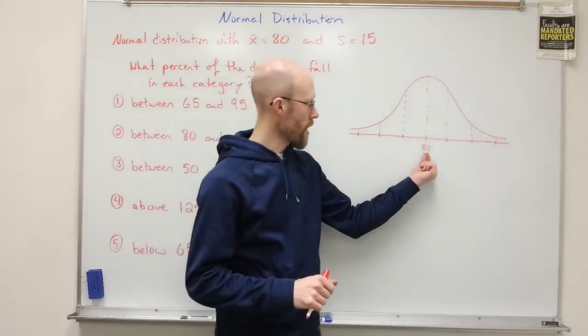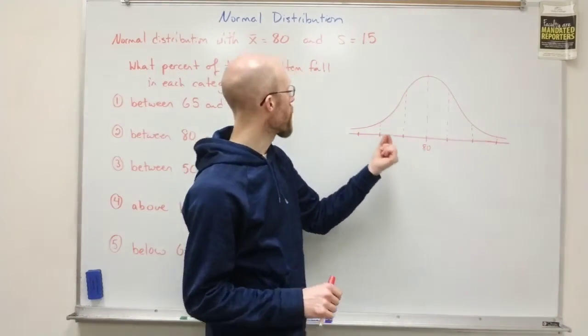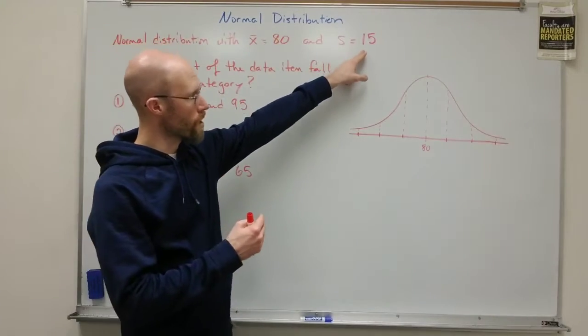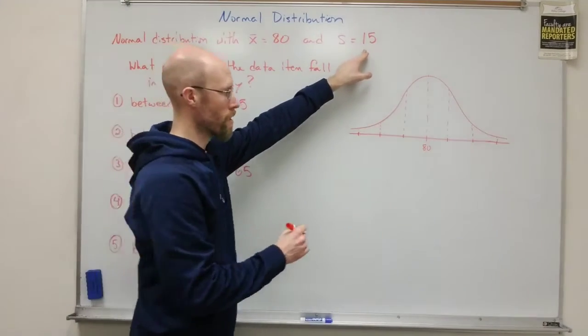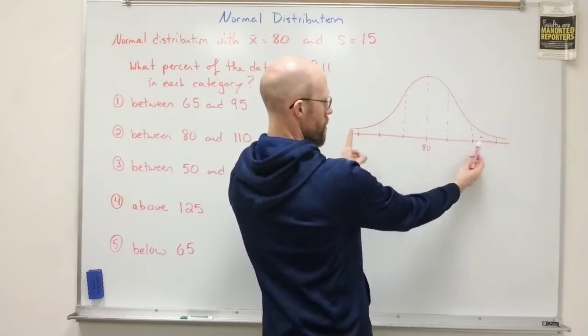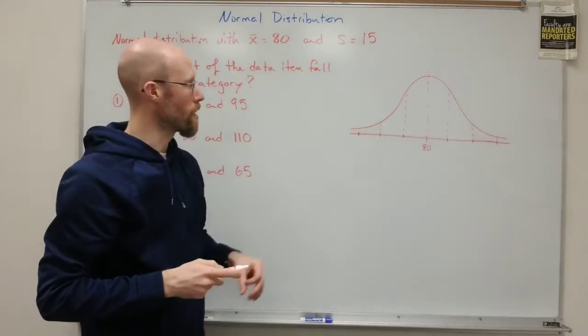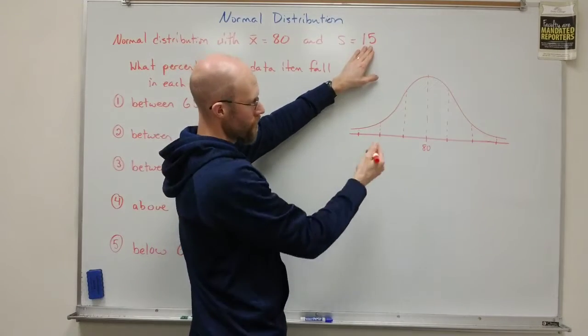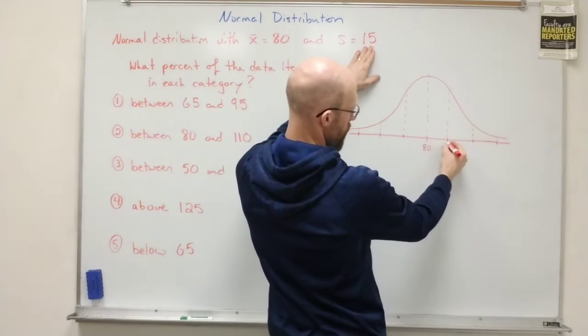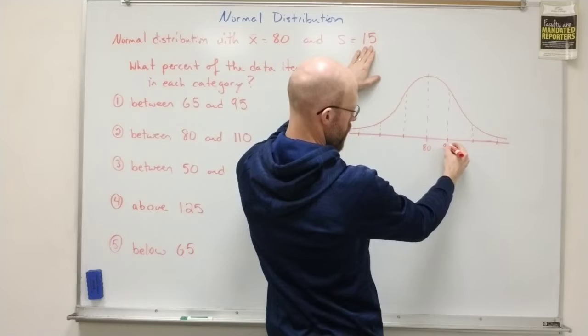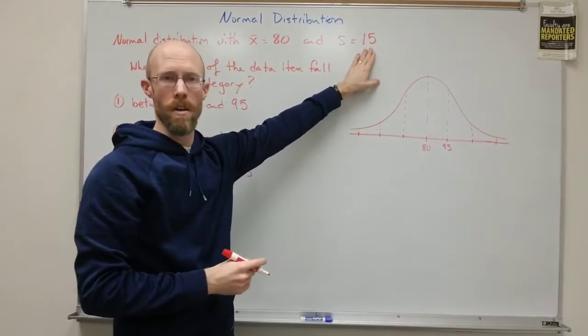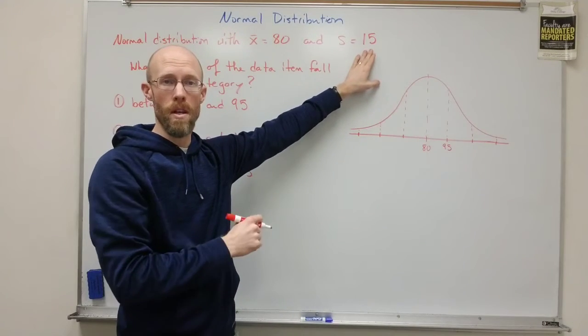So if 80 is the mean and you want to go one standard deviation above, each of these dashed lines represents one additional standard deviation above and below the mean. Then if the standard deviation is 15, you add 15 to get 95. So 95 would be one standard deviation away.